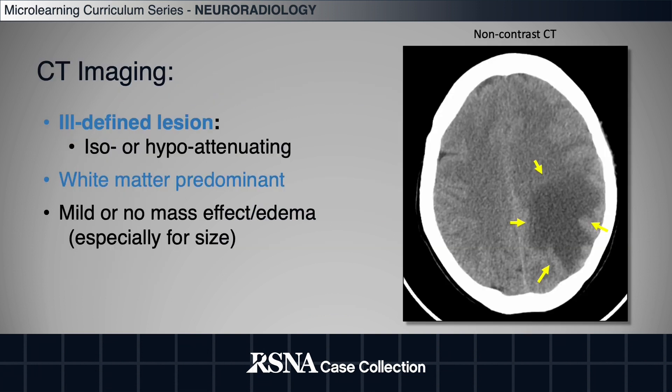On CT imaging, lesions are ill-defined and iso- or hypoattenuating, white matter predominant, and have mild to no mass effect when taking their size into account.